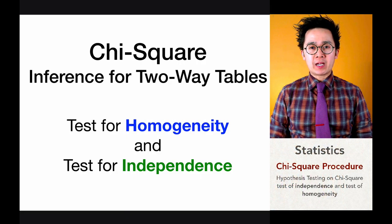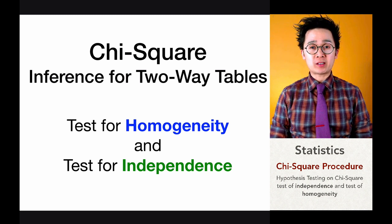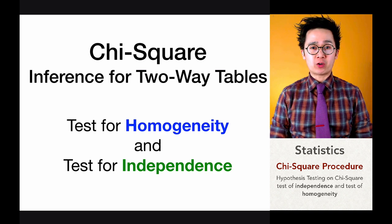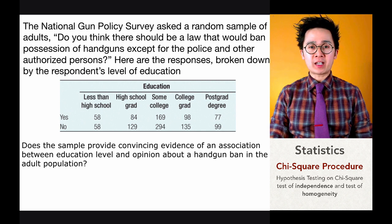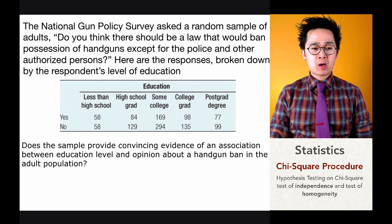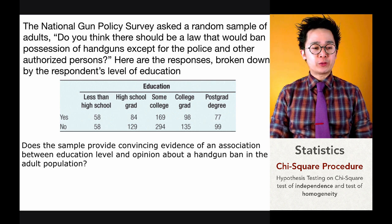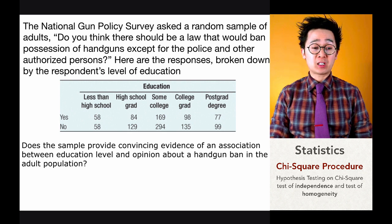Now we will answer the chi-square test using the two-way table, and the specific test that we will use is the test for independence. In our first case, the National Gun Policy Survey asked a random sample of adults: do you think there should be a law that would ban possession of handguns except for the police and other authorized persons?